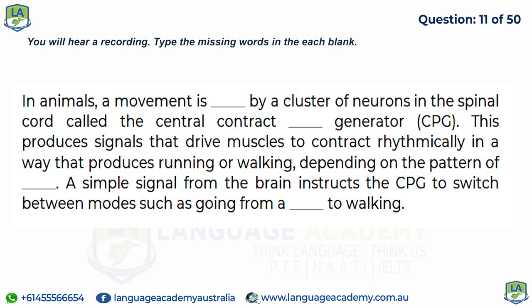In animals, movement is coordinated by a cluster of neurons in the spinal cord called the central pattern generator, or CPG. This produces signals that drive muscles to contract rhythmically in a way that produces running or walking, depending on the pattern of pulses. A simple signal from the brain instructs the CPG to switch between modes, such as going from a standstill to walking.